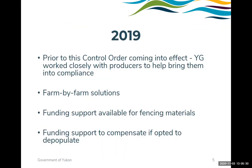The control order came into effect this past January, but our work began well before that. The control order was issued in late 2018, and in 2019 the year was spent informing producers of the requirements and assisting them to achieve compliance prior to the order coming into effect. Communications were key. We held meetings with industry, used social media to reach as many people as we could, and met with producers one-on-one as needed. We approach each farm as a unique situation, as farm-by-farm solutions are needed.